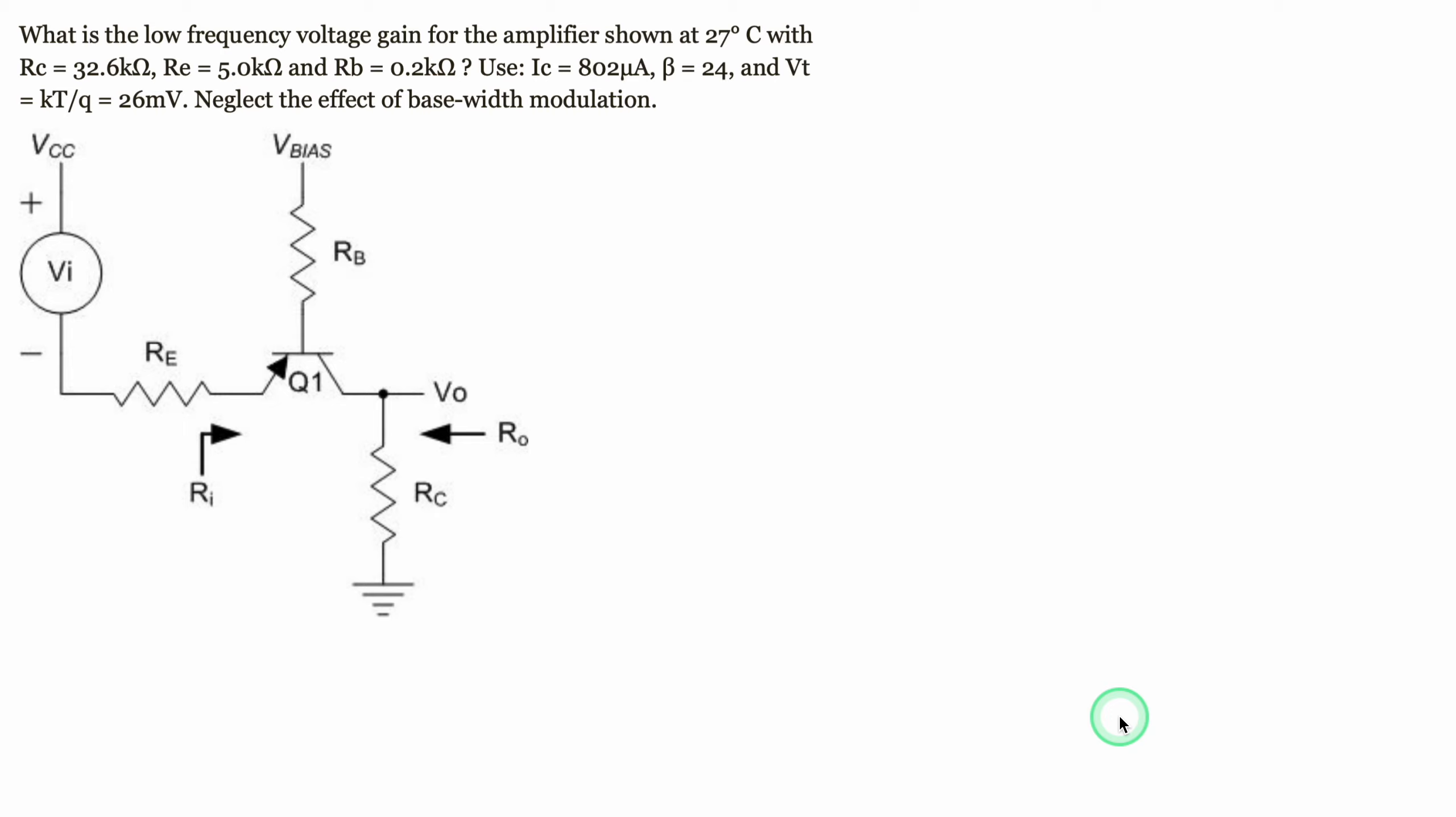In this problem we're asked what is the low frequency voltage gain for the amplifier. We're given specific information, but this works for any general problem that looks like this. We need to neglect the effects of base width modulation.